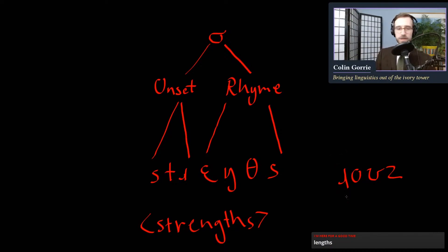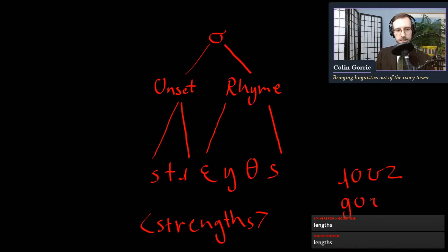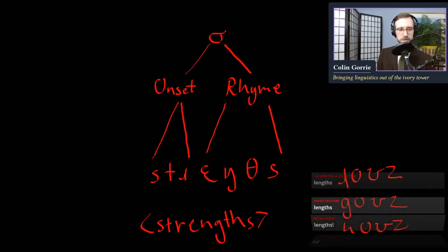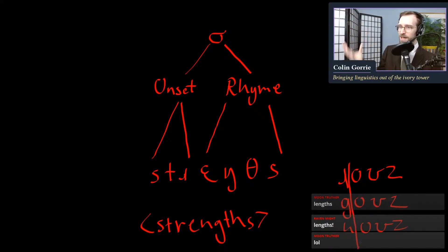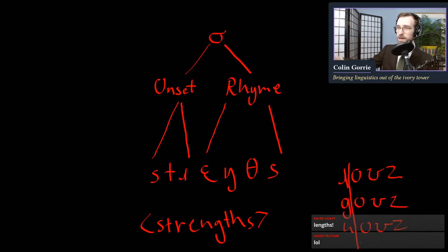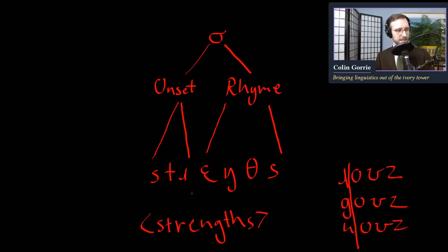But if we were to use rose, we could rhyme rose with goes, hose, et cetera. And they all share everything from the syllable sonority peak onwards. And so that's why they rhyme. And similarly, strengths and lengths, we would just exchange STR or satara with LA, and then we have a rhyme. So that's the onset and the rhyme.